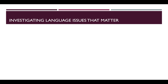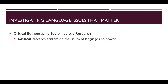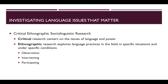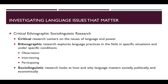While there are a variety of methods used in sociolinguistic research, in this course we are going to employ a broad range of approaches that fall under the umbrella of critical ethnographic sociolinguistic research. This research is critical because it centers on the issues of language and power. It is ethnographic because we investigate language practices in situ — in the field where they are used, in specific situations and under specific conditions — by observing them, interviewing their users, and participating in these practices ourselves. And it is sociolinguistic because we investigate how and why language matters socially, politically, and economically.